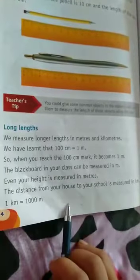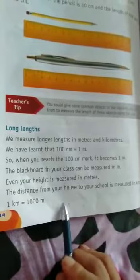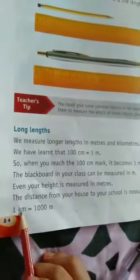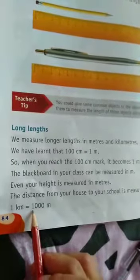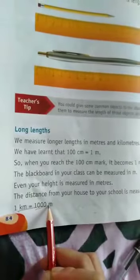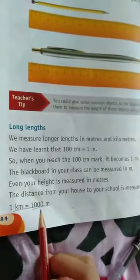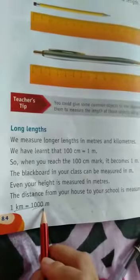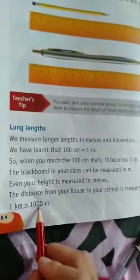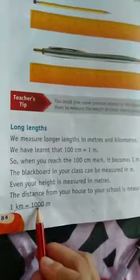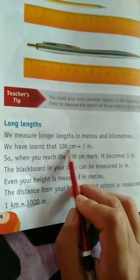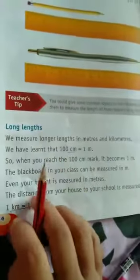For example, from zero to a far distance, we measure in kilometers. One kilometer is equal to one thousand meters. Underline this. So the conversion units are: one kilometer equals 1,000 meters, and one meter equals 100 centimeters. Everyone memorize these. You should also go through this.